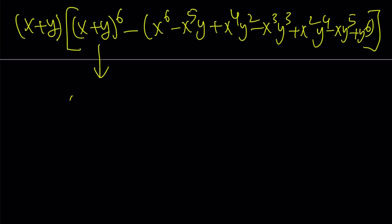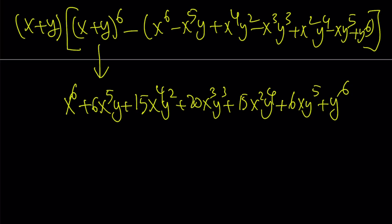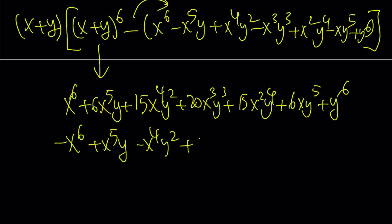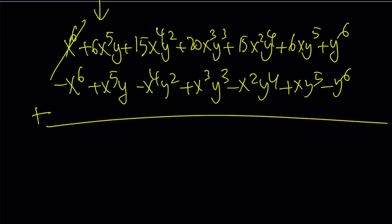Let's go ahead and expand this. It's going to become x to the 6th power. The coefficients for the 6th row of Pascal's triangle give us: x to the 6th plus 6x to the 5th y, plus 15x to the 4th y squared, plus 20x cubed y cubed — that's the middle term — plus 15x squared y to the 4th, plus 6xy to the 5th, and finally y to the 6th. Then from this we're going to subtract something. Let's go ahead and negate everything so we can just add them. We get negative x to the 6th plus x to the 5th y, minus x to the 4th y squared, plus x cubed y cubed, minus x squared y to the 4th, plus x y to the 5th, minus y to the 6th. Since we negated everything in the second parentheses, we can add these up, and some terms are going to cancel out, and we end up with like terms.